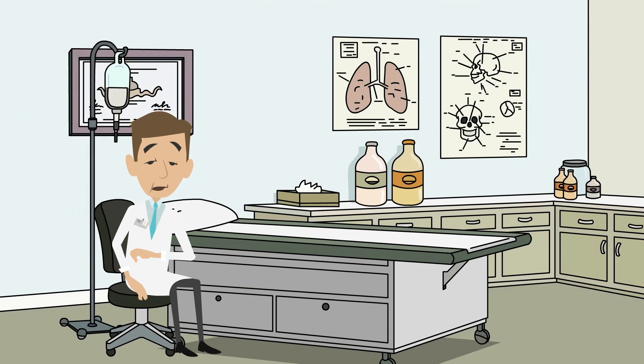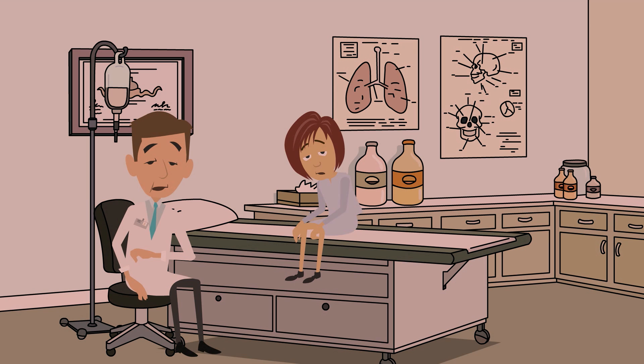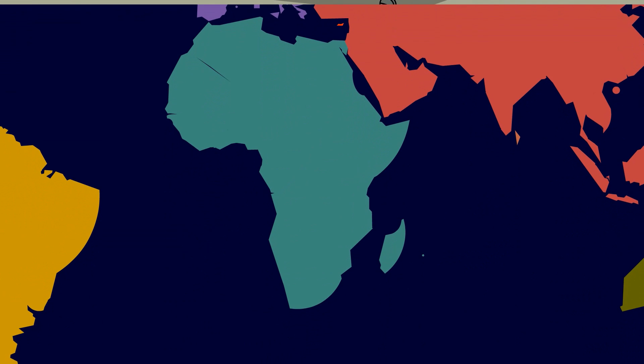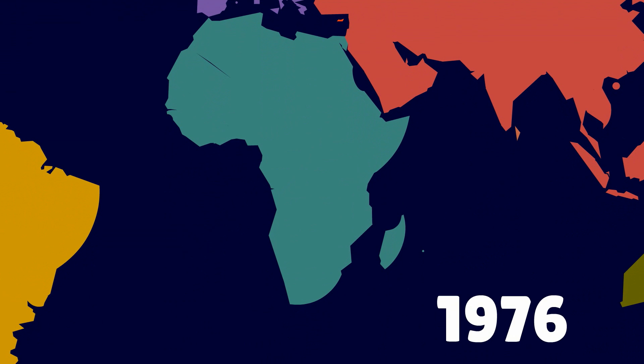Ebola virus causes an acute and serious illness, which is often fatal if untreated. Ebola disease first appeared in 1976 in Enzara and Yambuku.